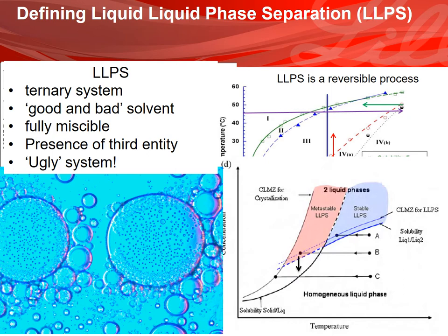In this talk I will focus only on LLPS in the case of a ternary system where a good solvent and an anti-solvent are fully miscible in their range of composition and temperature, but where the presence of a third entity — the solute — will force the system to phase split and deliver an undesirable system.